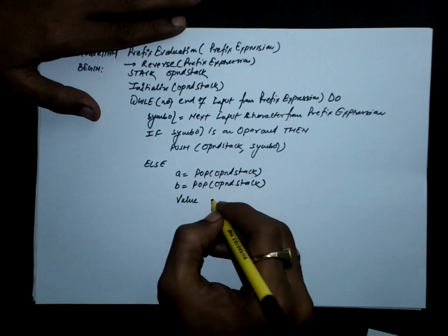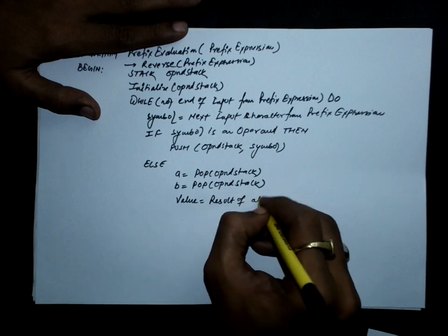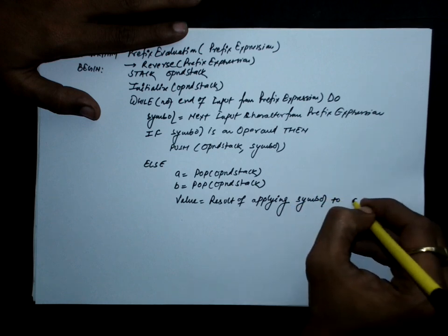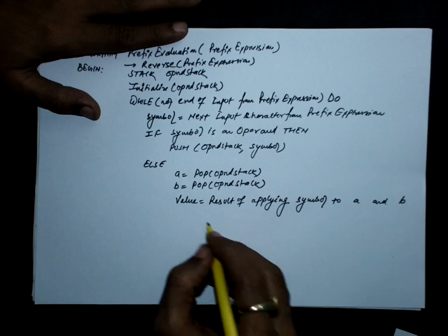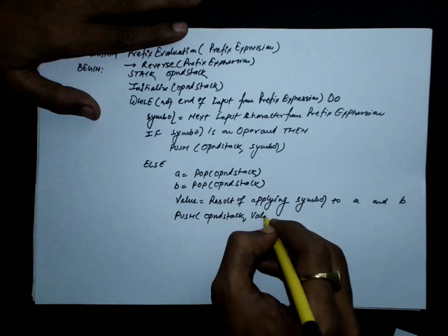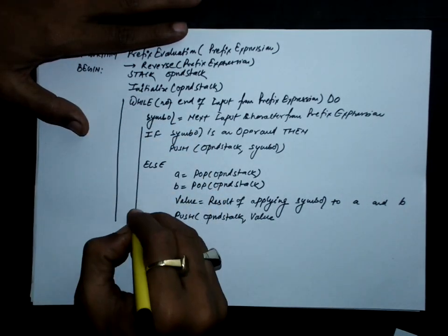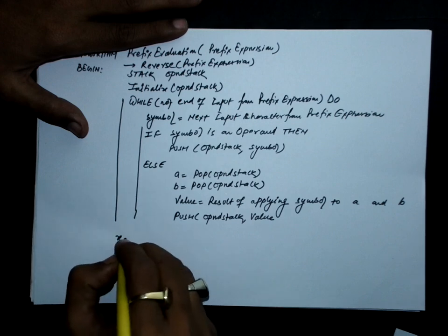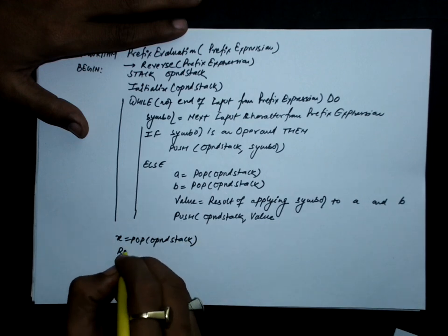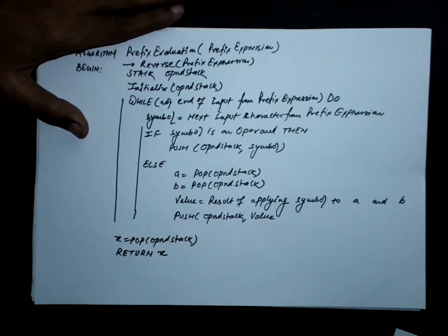Then we apply the symbol — which is an operator — to A and B: value equals the result of applying the operator to A and B. We push this value on the operand stack and look for the next symbol. This continues while symbols remain. When there are no more symbols, pop the stack and return the popped value, which is the evaluated answer of the given prefix expression.